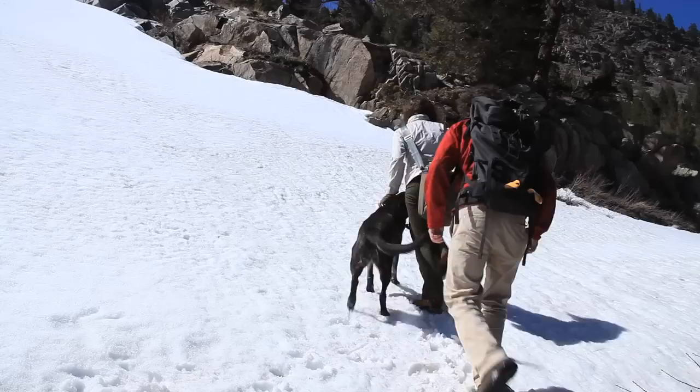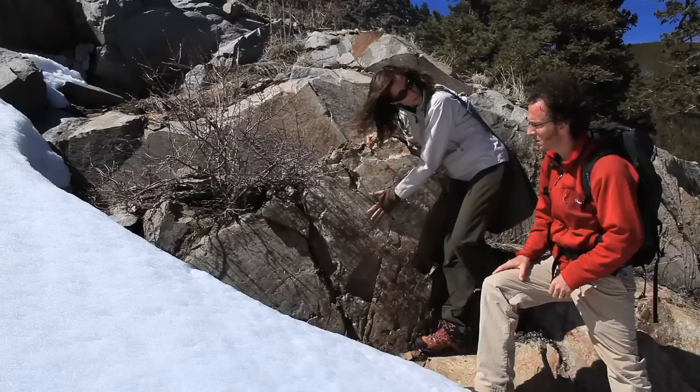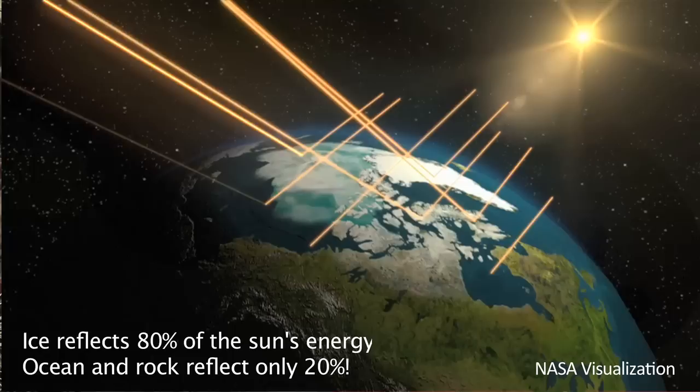Let me show you something that's pretty important. Here's a really good example of the differences in albedo between rock and snow. Since the rock has a lower albedo, it's been absorbing a lot of the sun's energy, heating up and melting back the snow that used to be next to it. So the rock heats up, melts back the snow, which exposes more rock, which heats up a little bit more, melting back more snow.